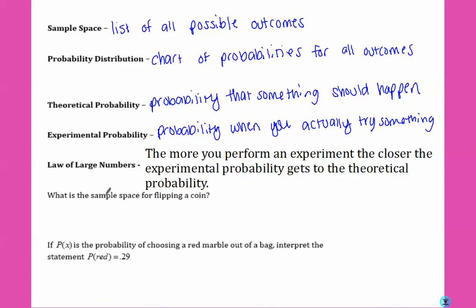So what is the sample space for flipping a coin? Sample space is a list of all possible outcomes. When we flip a coin, what could happen? It could land on heads or it could land on tails.